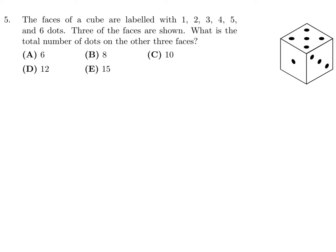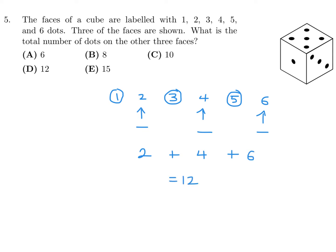Question 5: The faces of a cube are labeled 1 through 6 dots, and 3 of the faces are shown. What is the total number of dots on the other 3 faces? The diagram shows 5, 3, and 1 — so the faces not shown are 2, 4, and 6. The 2 has 2 dots, 4 has 4 dots, and 6 has 6 dots. Total: 2 + 4 + 6 = 12. So D is the answer for number 5.